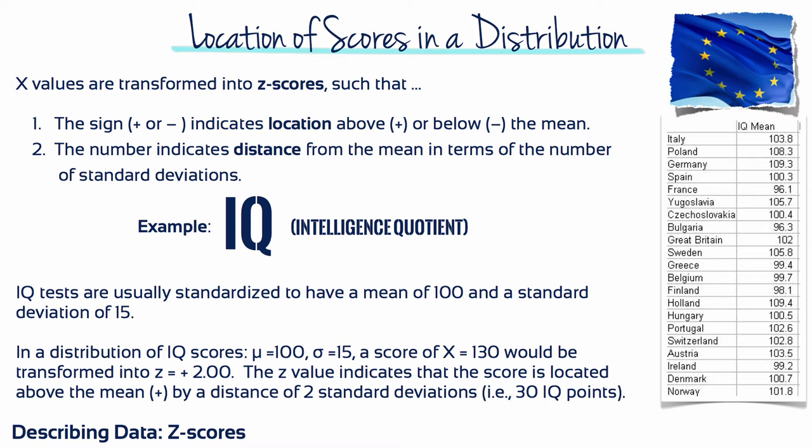IQ tests are usually standardized to have a mean of 100 and a standard deviation of 15. In a distribution of IQ scores, a score of x equals 130 would be transformed into z equals plus 2. The z-value indicates that the score is located above the mean by a distance of two standard deviations, i.e., 30 IQ points.